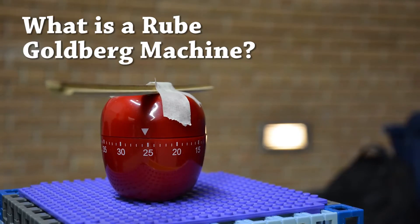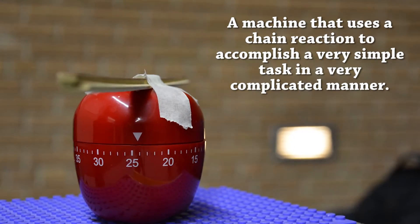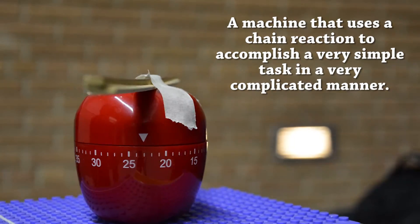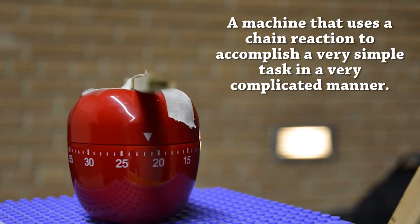What is a Rube Goldberg machine? It is a machine that uses a chain reaction to accomplish a very simple task in a very complicated manner.